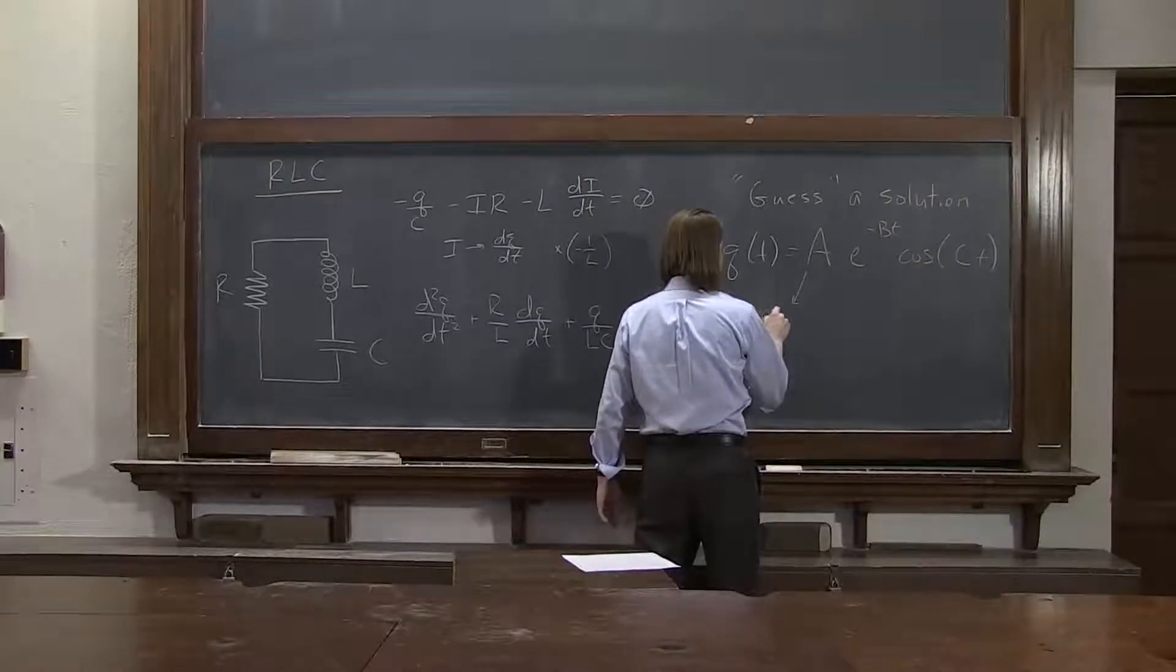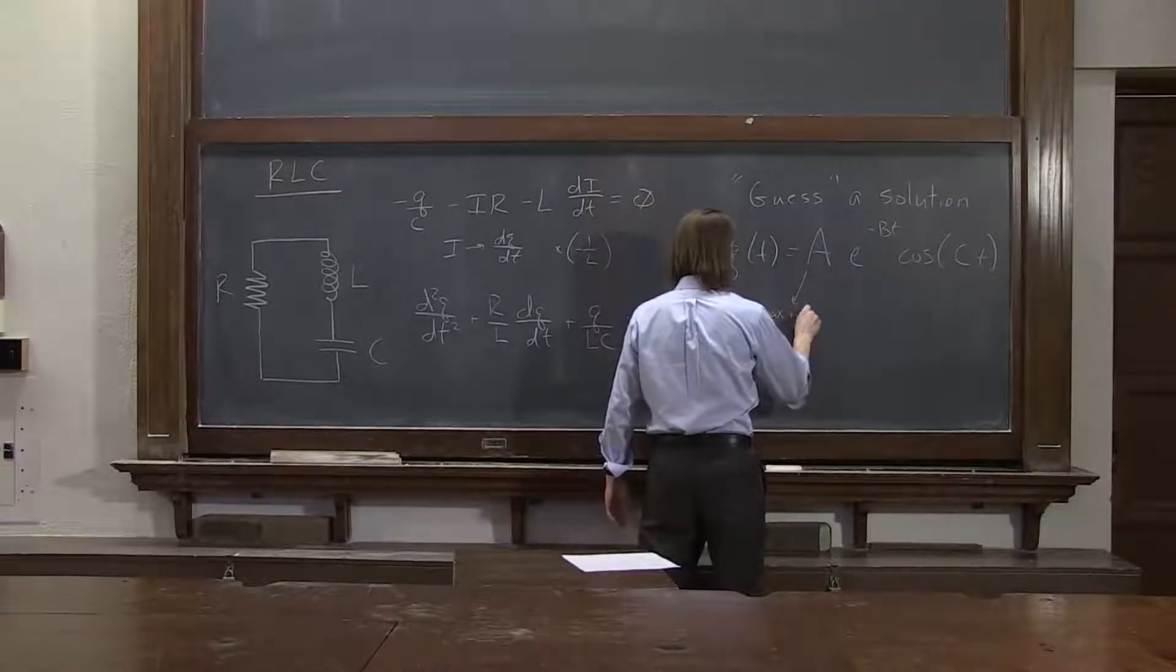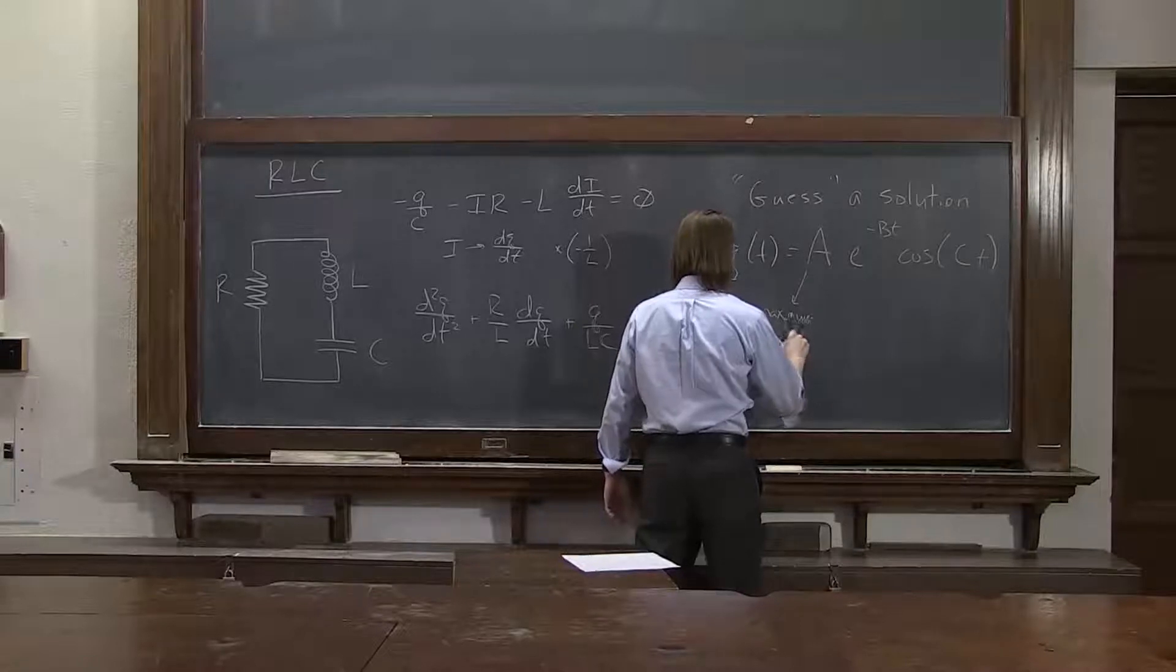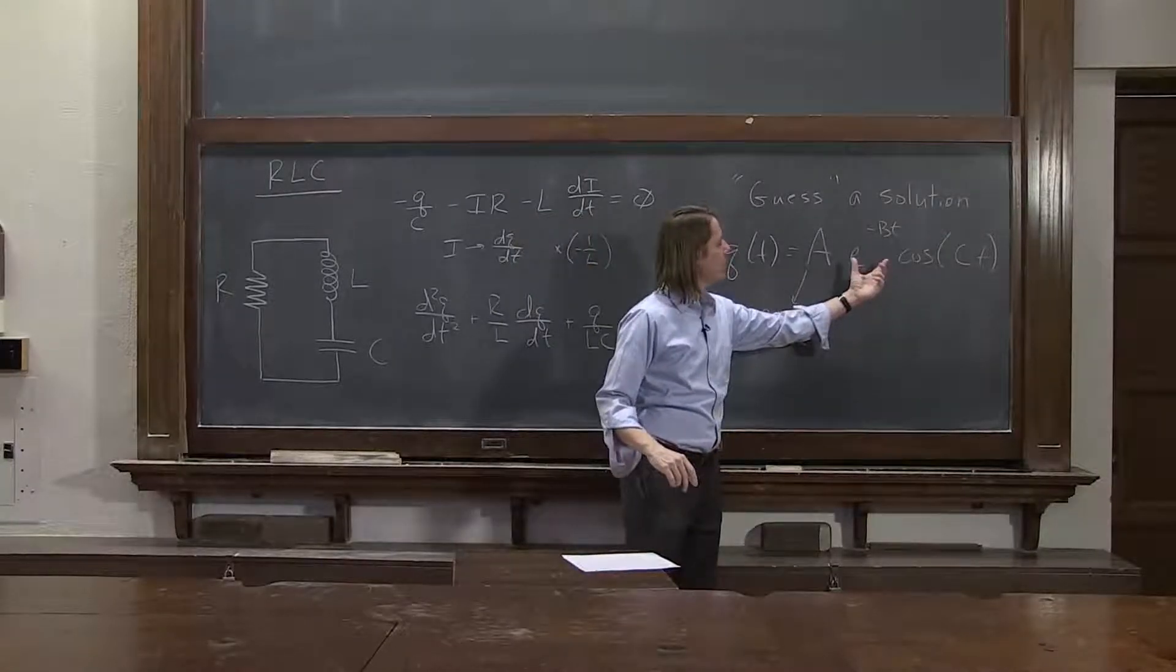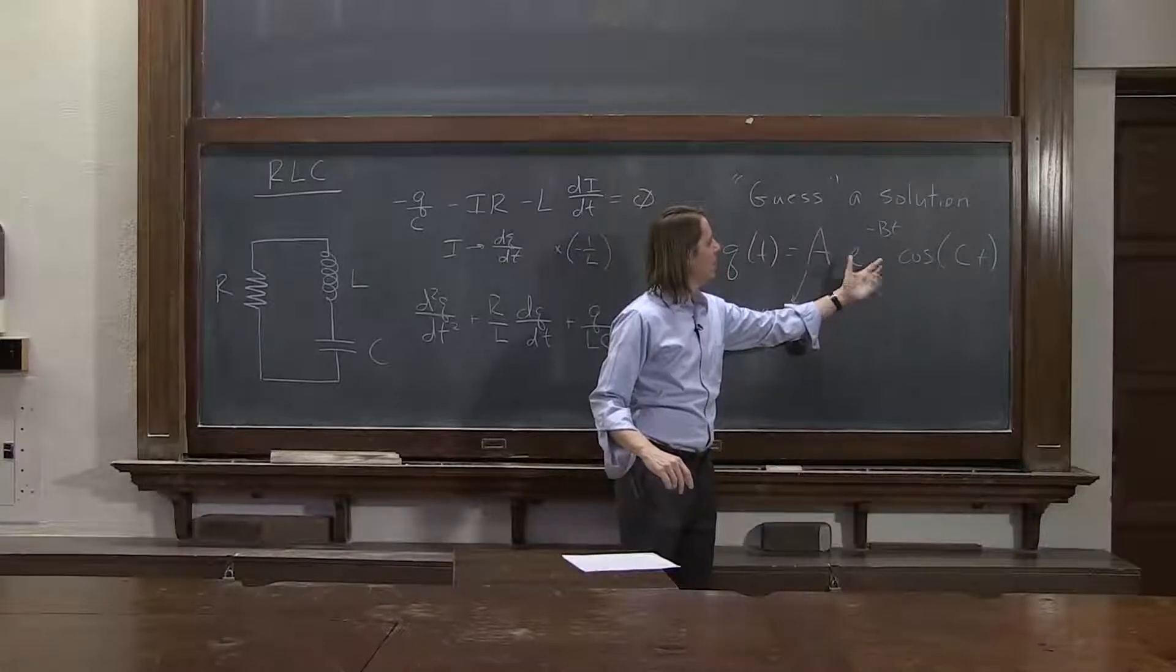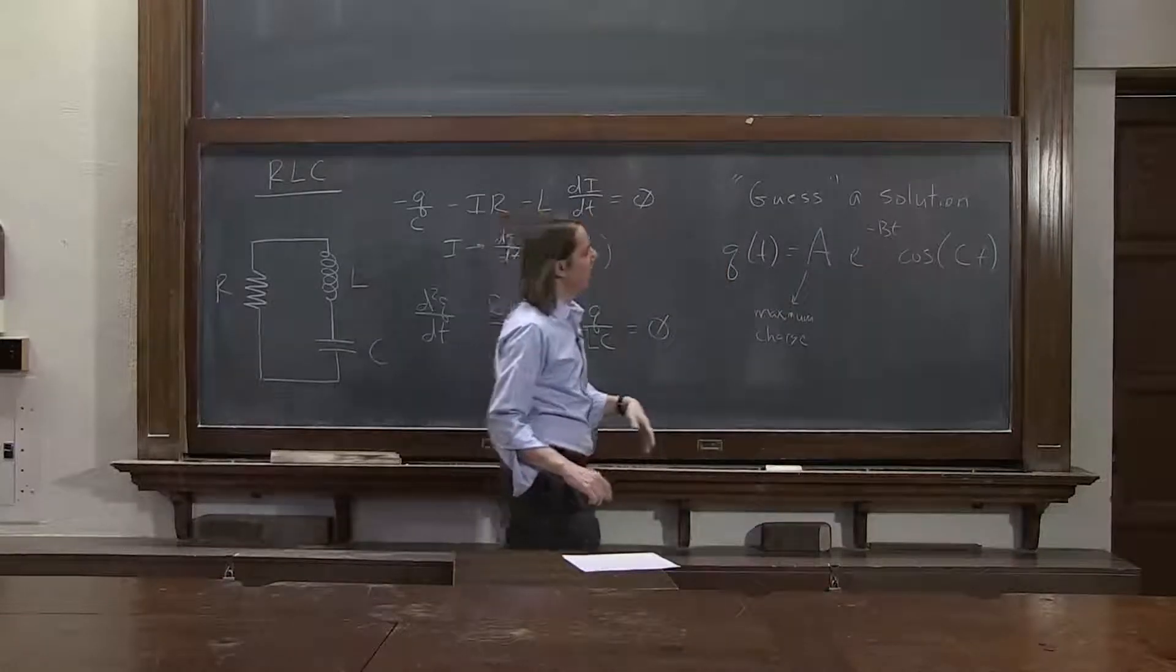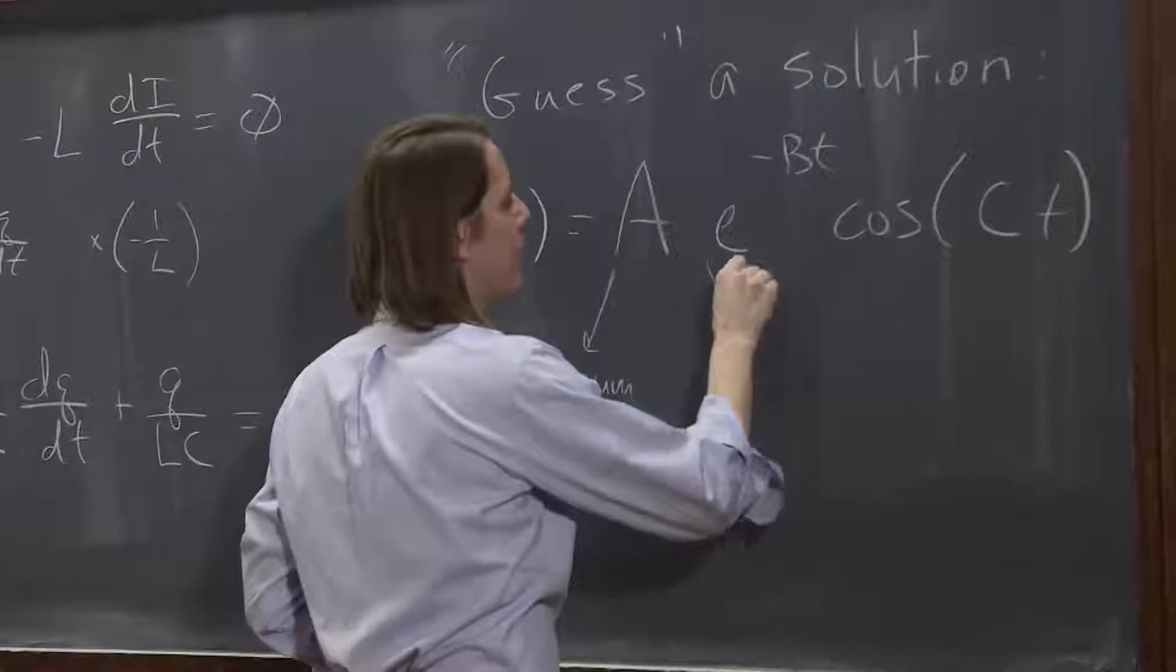So we made sort of a general guess with three parameters, where this is some, you can tell, some maximum charge. It's some maximum charge. And BT, this represents the damping.